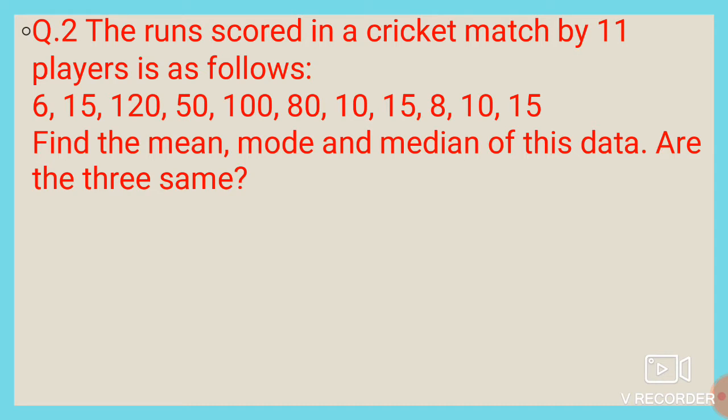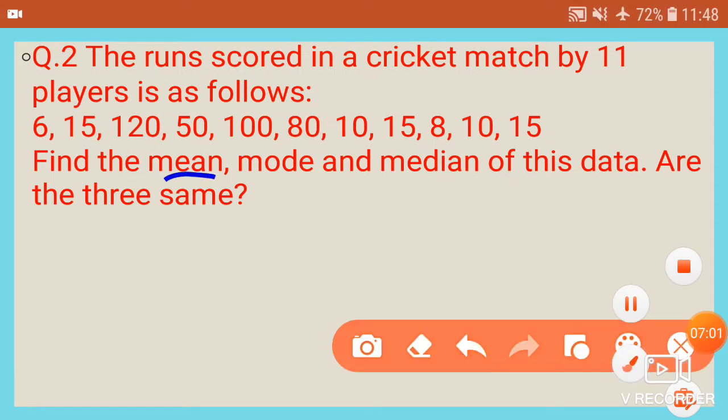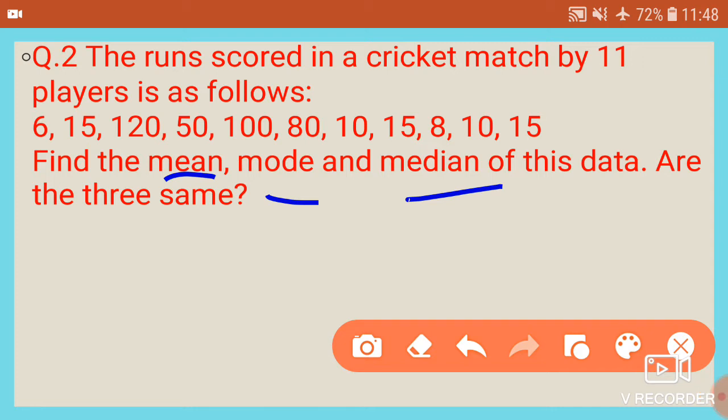Question number 2: the runs scored in a cricket match by 11 players are: 6, 15, 120, 50, 100, 80, 10, 15, 8, 10, 15. We need to find the mean, mode, and median of this data, and check if all three are the same.